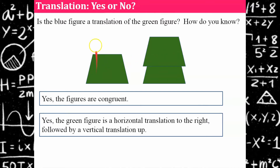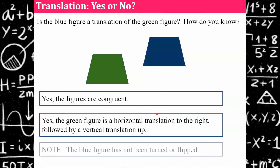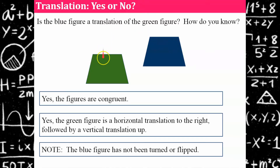Would it be wrong to say that it went up and then to the right? No. But when we think about how to refer to it algebraically using ordered pairs, we want to talk about horizontal then vertical. Also note that this blue figure has not been turned or flipped — it's in the same orientation as the original. So the blue is the image of the original green figure; it's a translation because we've done a slide to the right and up, and they are congruent figures.